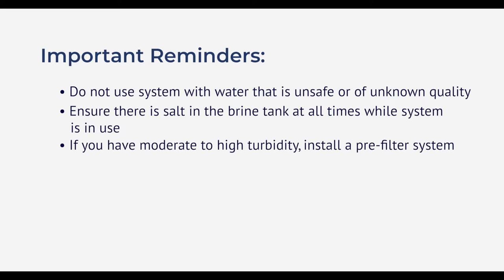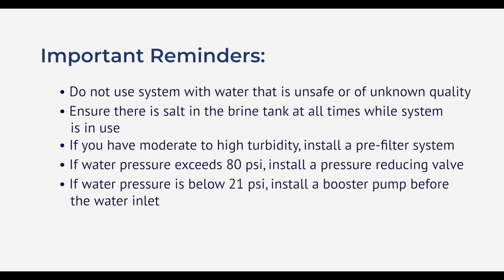If you have moderate to high turbidity, install a pre-filter system. If your water pressure exceeds 80 PSI, install a pressure reducing valve. If the water pressure is under 21 PSI, install a booster pump before the water inlet.